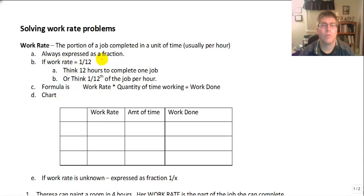So we will always express work rate as a fraction. For example, if a work rate is 1/12, think here a couple different things. You can think if a work rate is 1/12, it takes 12 hours to complete one job. Or you can think that if a work rate is 1/12, they finish 1/12 of the job per hour, or per unit of time, whatever that is.